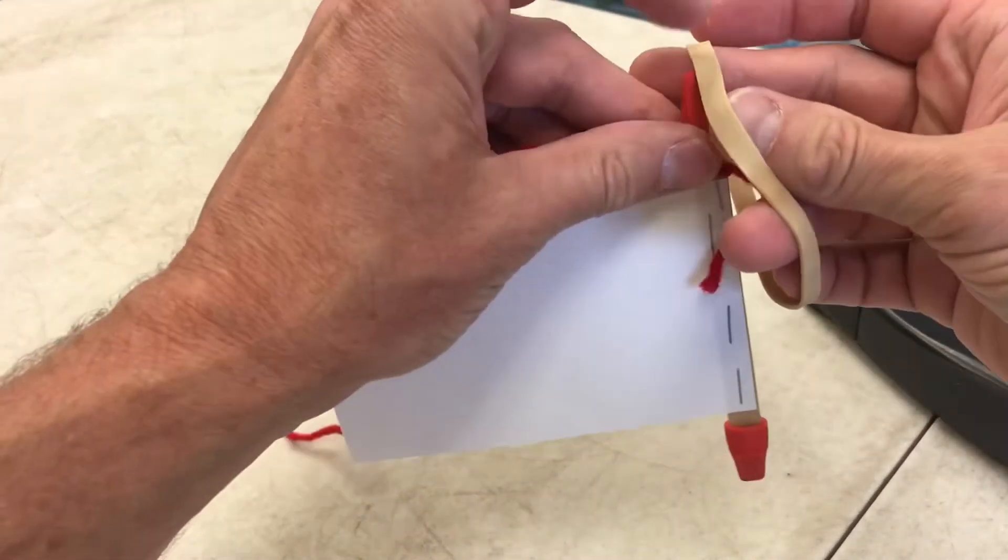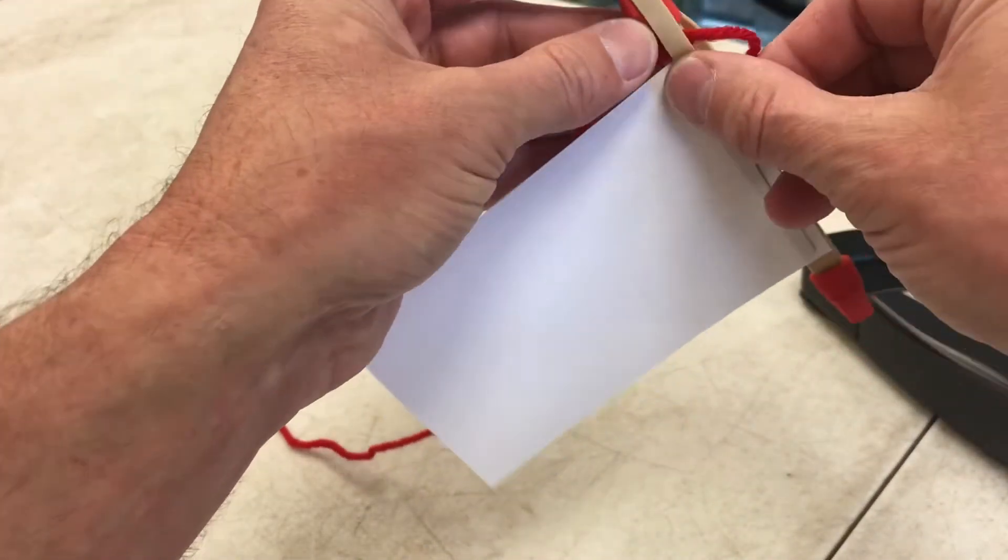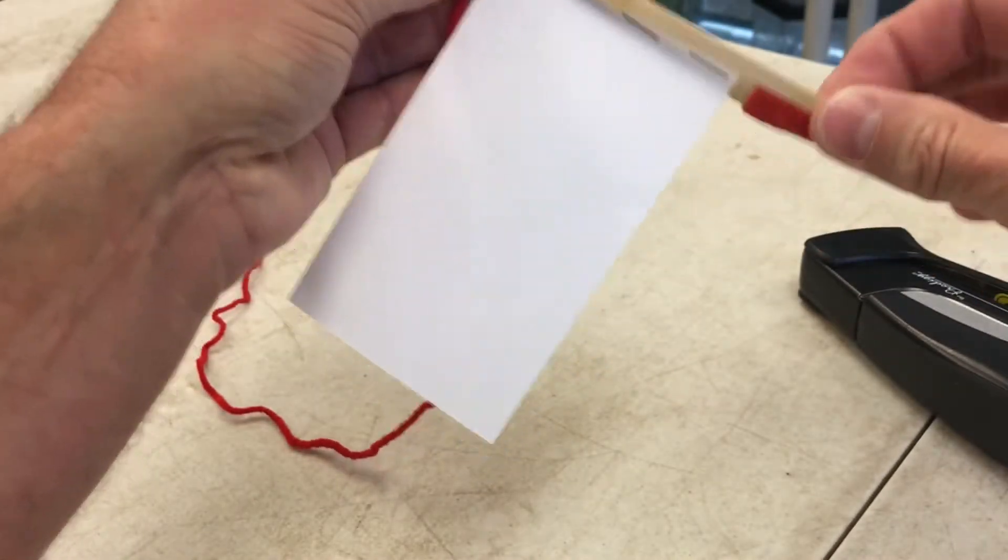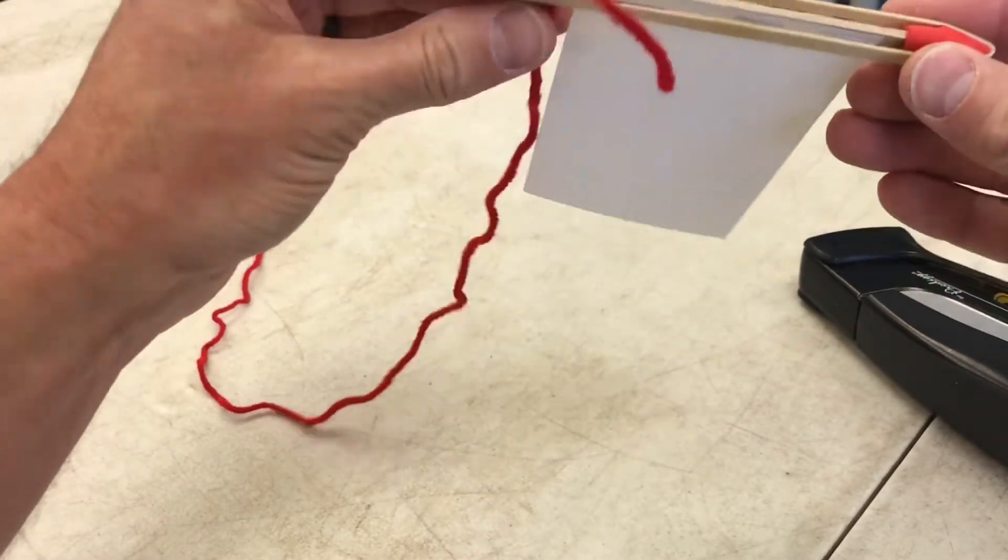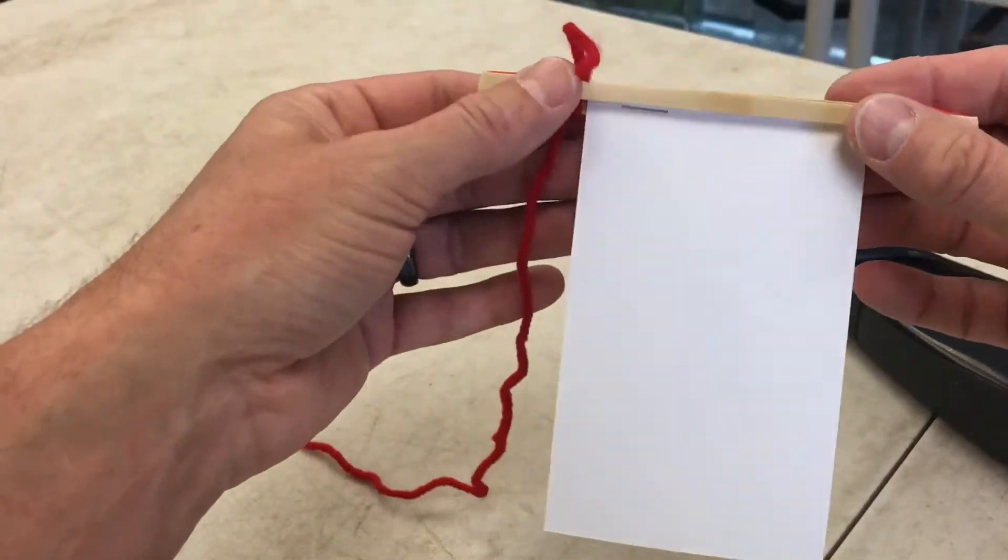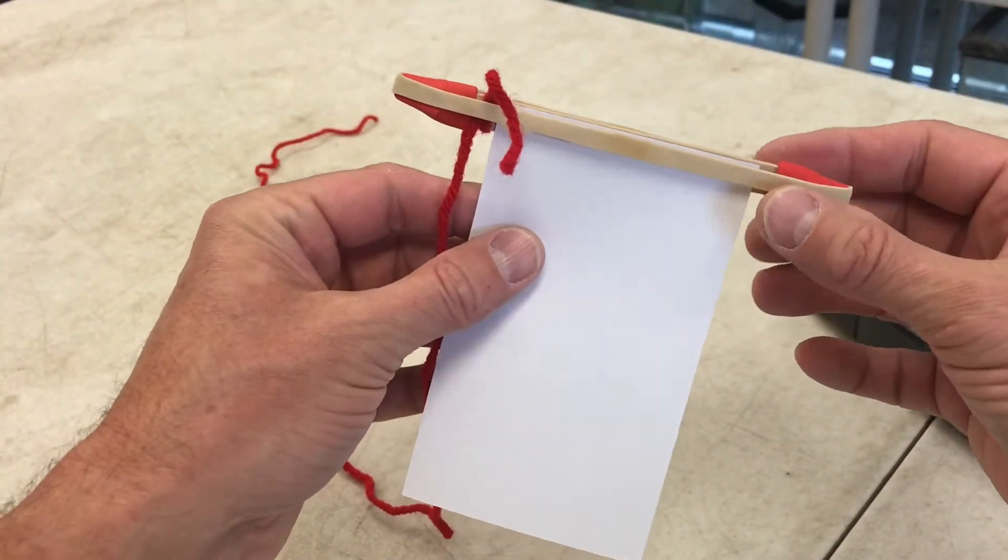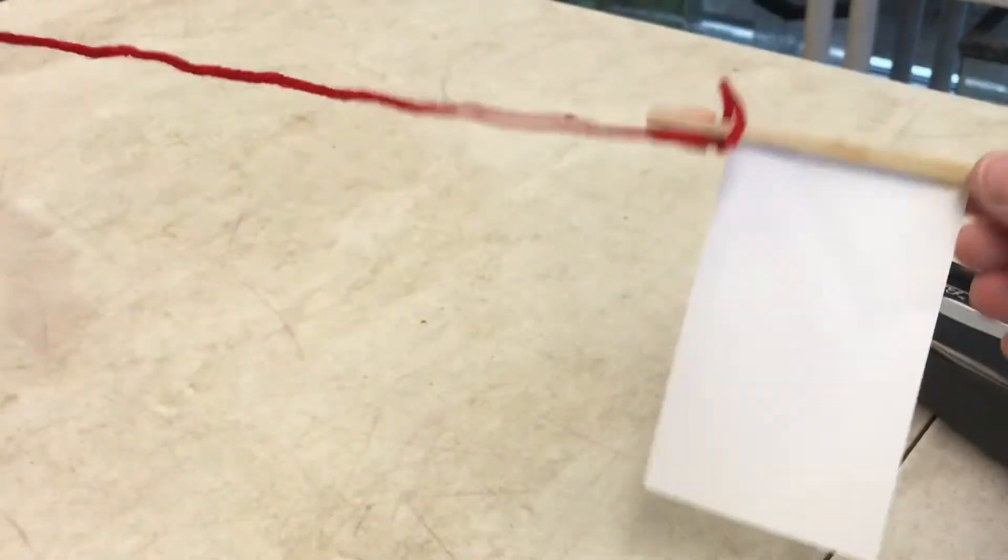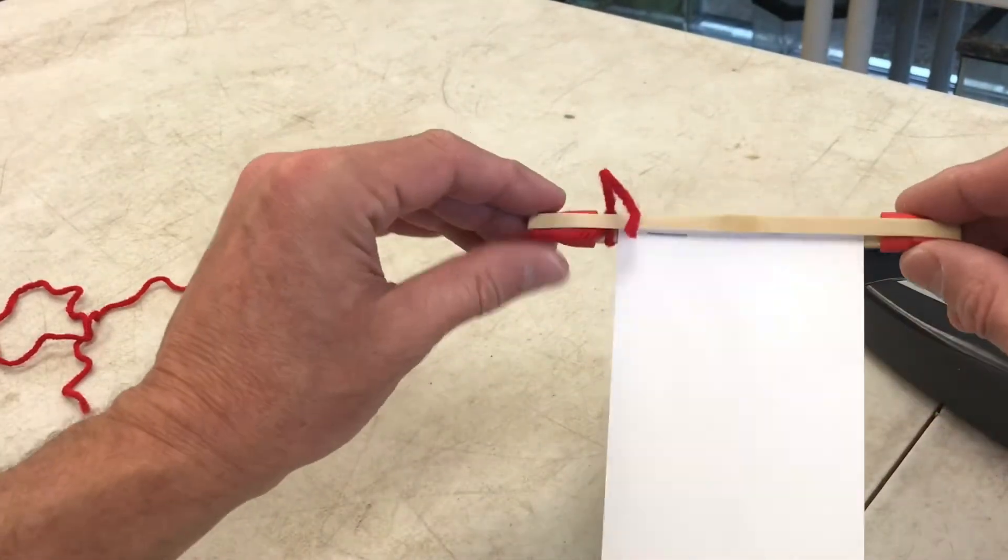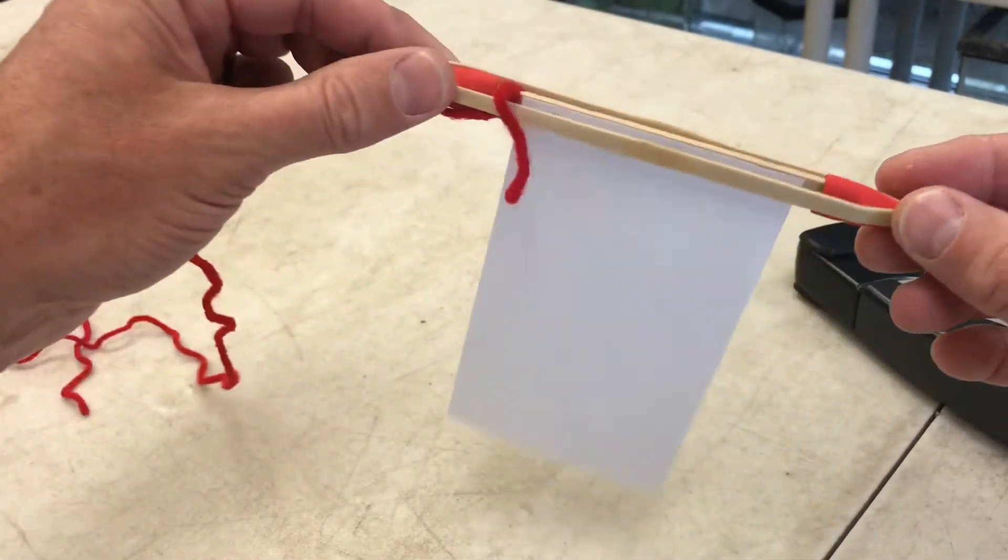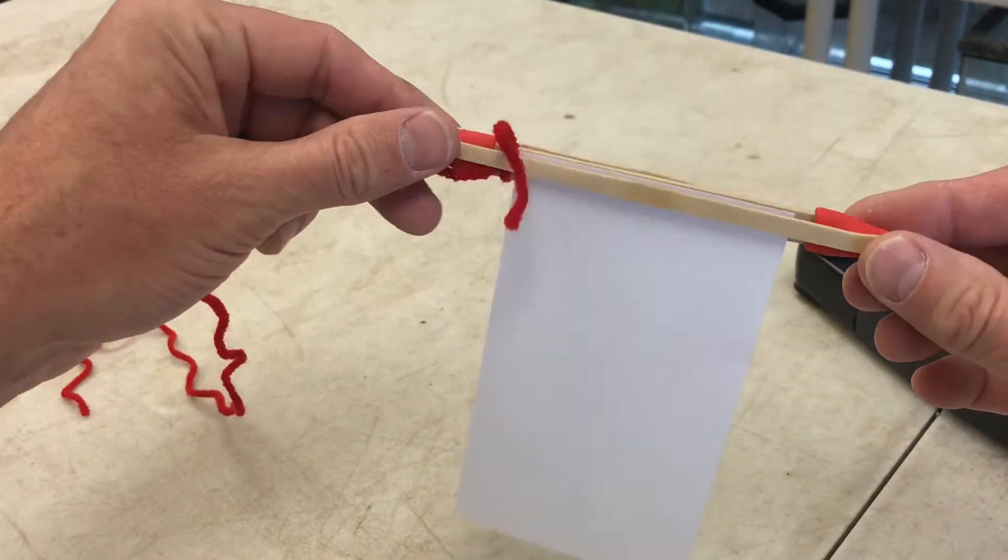And then last but not least, this is probably the tricky part if you even want to call it tricky. You kind of take your rubber band and run across both ends. This is, I think it's a number 64 rubber band, it's a little bit bigger than the ones you may run across, but anyway they're pretty easy to get. And so now we have our bug on a leash set up.